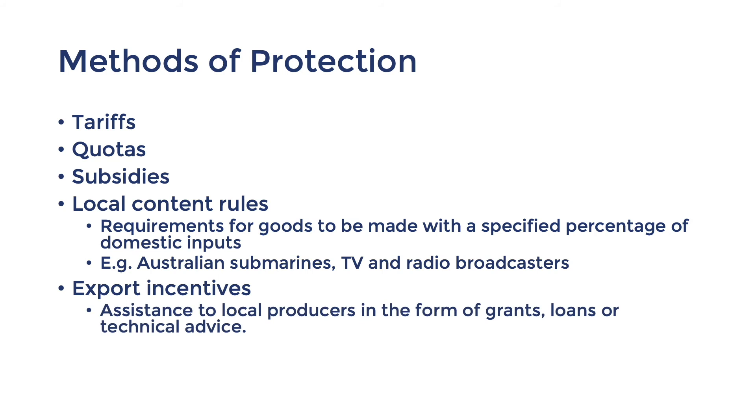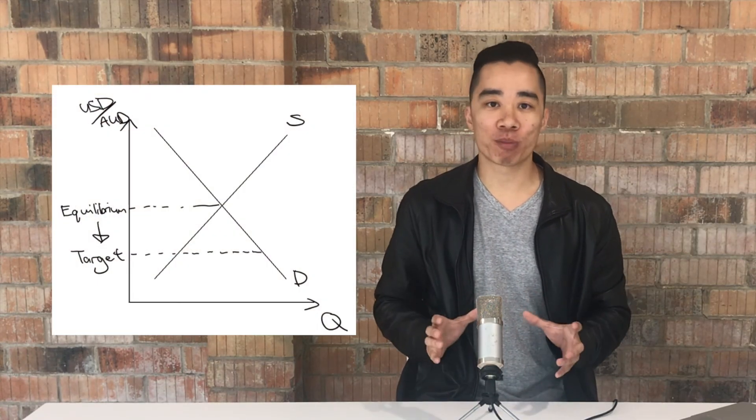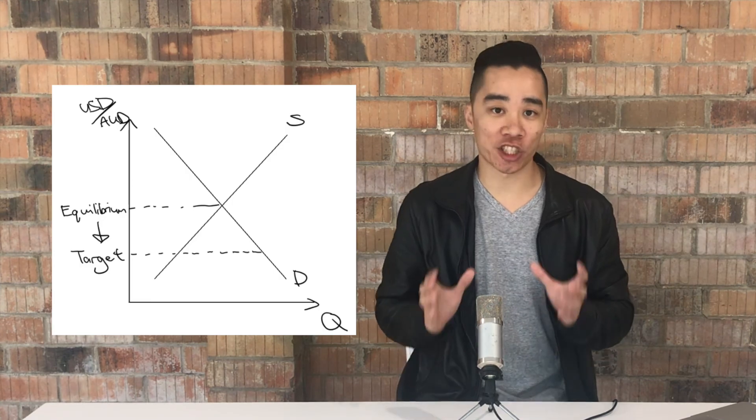Export incentives include assistance to local producers in a form of grants, loans or technical assistance. These policies focus on expanding into foreign markets, rather than restricting imports. An Australian example is the Export Market Development Grant, or EMDG, that provides financial and general assistance to Australian businesses. There's one more method of protection that's not in this part of the syllabus, but you might read about it in the news. I'm talking about devaluing the currency. You can learn more about this by watching my video on government intervention on the exchange rate.